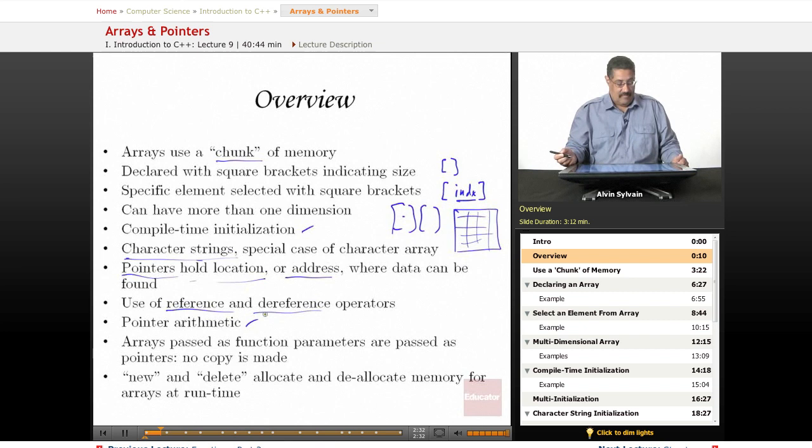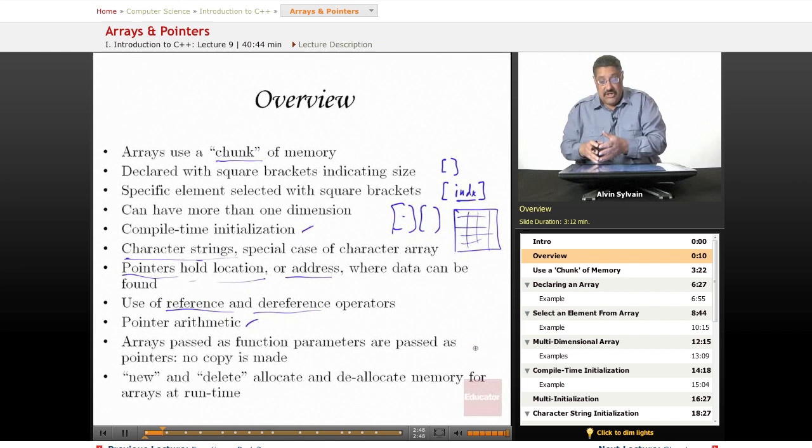Arrays can be used as a function parameter, but there's no call by value for an array. Think about it, arrays can be huge. The way copy by value works, it takes a copy of the parameter in the function and uses that copy. If you've got a 12 gazillion array and you're going to copy, that takes too long to copy 12 gazillion, so we don't do that.